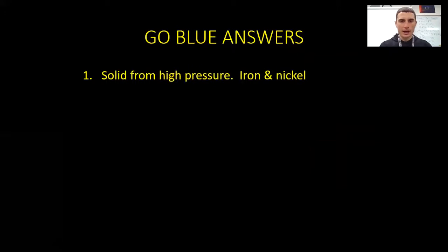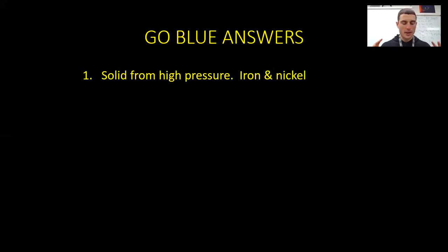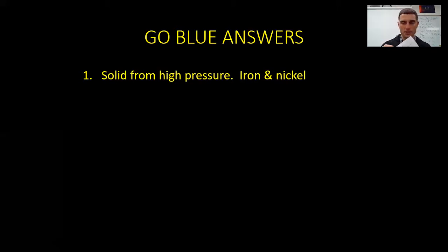Number one: The inner core is a solid, not a liquid. People think of the inside of the Earth and think it's a ball of lava inside — no, not the case. Most of the layers are solid, including the inner core, because the pressure is insurmountable — it's a crazy amount of pressure down there. What is it made of? If we go back to our notes from yesterday, you'll see the composition. It's going to be iron and nickel. It's basically a super hot metal ball.